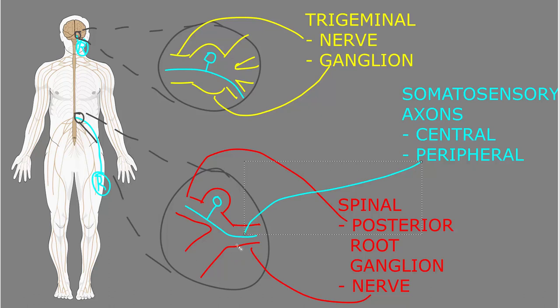So here in this expanded view, here is the spinal nerve, and the peripheral axon is entering like this, and then the central axon is going to continue into the spinal cord to bring that somatosensory information into the central nervous system.